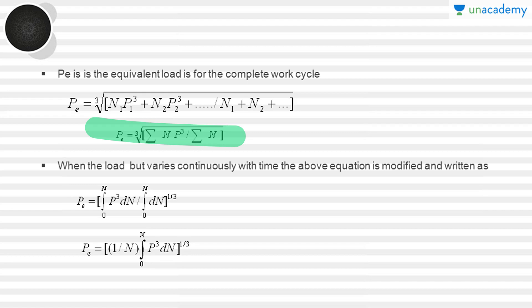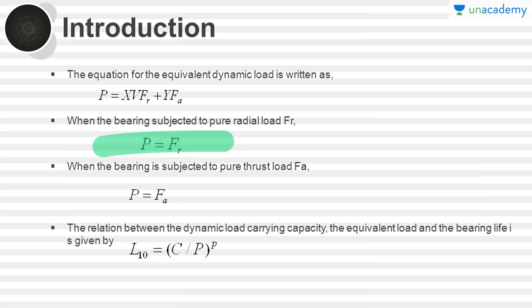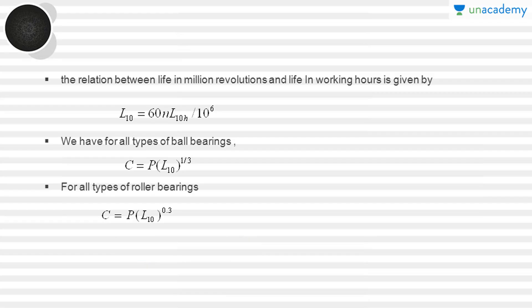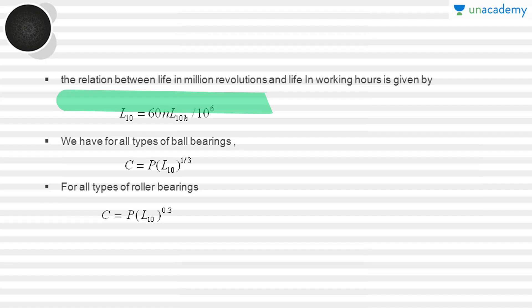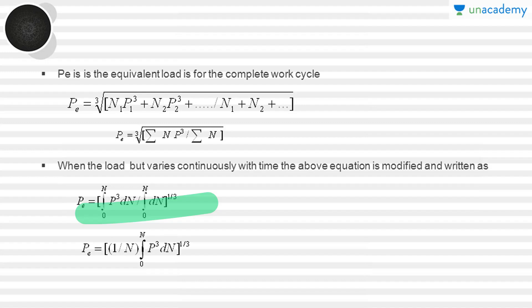This equivalent load equation is used for calculating the load carrying capacity and other bearing details. The equivalent load PE will be substituted into the formula for C, the dynamic load carrying capacity, for the corresponding cyclic load acting on the bearing.